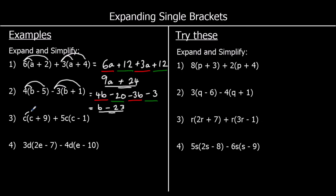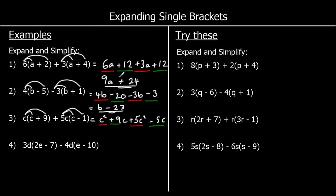On to the third one: c times c is c squared, and c times 9 is 9c. Then 5c times c is 5c squared. So we've got c squared terms and c terms. For the c squareds: 1c squared plus 5c squared is 6c squared. For the c's: 9 take away 5 gives 4. So we've got 6c² plus 4c.